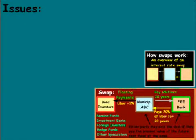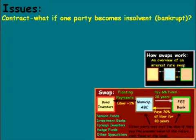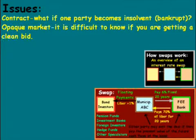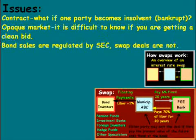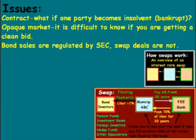Let's take a look at some of the issues with swaps. The first is the contract issue: what if one party becomes insolvent or bankrupt? If that's not written into the contract, it can be a thorny issue. Another issue is that swaps are an opaque market — it's difficult to know if you're getting a clean or best bid on a negotiated swap. Also, bond sales are regulated by the SEC, but swap deals are not, which means they don't have to report it and it's harder to know what's going on.